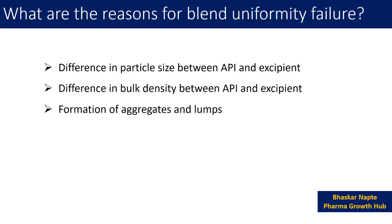The third reason can be the formation of aggregates and lumps. This issue can arise when you are using a wet granulation process. As part of wet granulation, you form a mass using an aqueous or organic solvent and prepare granules from that. If the granulation process is not well optimized, you can end up with aggregates and lumps, which can further lead to a non-homogeneous blend.